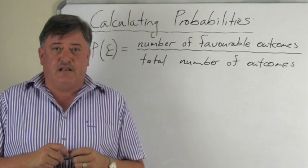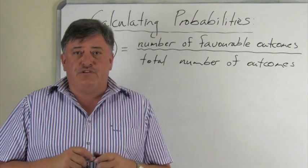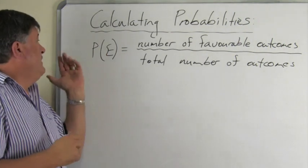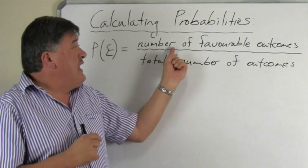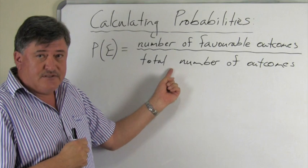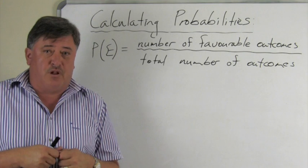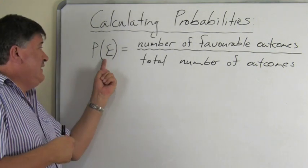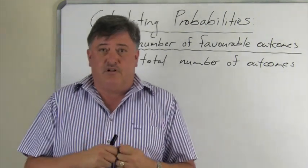We're now going to calculate probability using the formal definition. This definition is: P(E) is equal to the number of favorable outcomes divided by the total number of outcomes. Note that P is a formal symbol for probability and E represents the event.